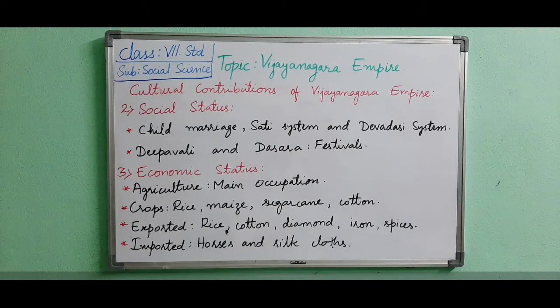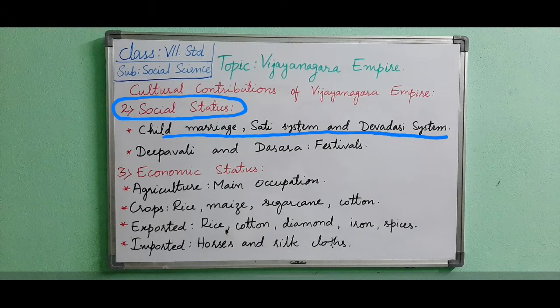At the time of Vijayanagara's period, there was a practice of child marriage, sati system, and devadasi system. Sati system means a historical practice in which a widow sacrificed herself by sitting on a funeral pyre after the death of her husband. This sacrifice of her life for the sake of her husband is called the sati system.